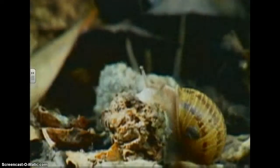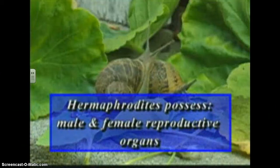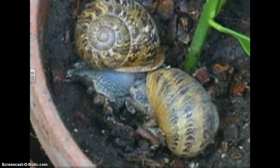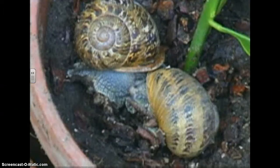Snails and slugs possess a rough, rasp-like feeding tongue to shred plant material before it is ingested. Snails are also hermaphrodites, meaning they possess both male and female reproductive organs. Nonetheless, they still seek out mates to fertilize their eggs.